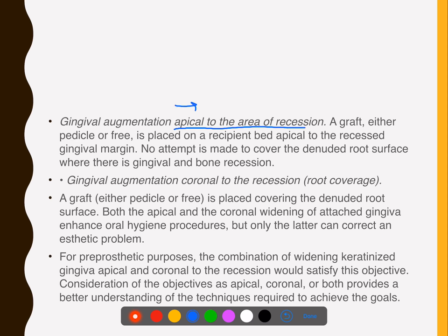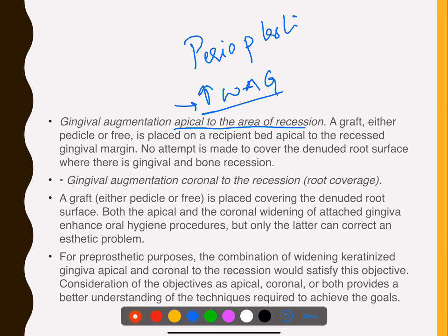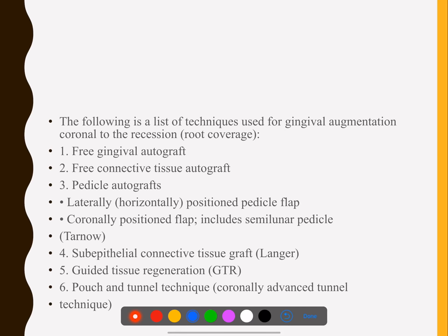When you increase the width of attached gingiva, this procedure is called perioplastic surgery because there is no aesthetic component here. But when you take something coronal to the recession for root coverage, this is more of an aesthetic surgery. Techniques used for gingival augmentation include free gingival graft, connective tissue graft, pedicle graft, laterally positioned flap, coronally positioned flap, sub-epithelial connective tissue graft, GTR, and pouch techniques.